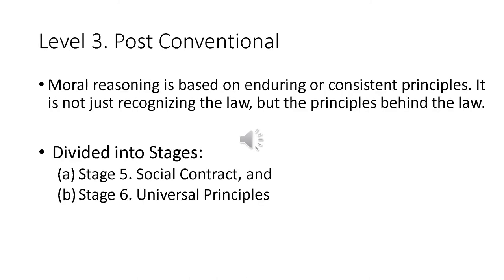The last level is level 3, post-conventional morality. Moral reasoning here is based on enduring and consistent principles — it is not just recognizing the law, but the principles behind the law. It is divided into two stages: stage 5 is social contract and stage 6 is universal principles.